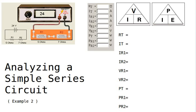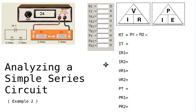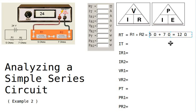So first of all, in a series circuit, the resistance is simply the sum of the individual resistances. We write that as RT equals R1 plus R2. In this case, we have 5 ohms plus 7 ohms — that gives us 12 ohms. 5 ohms plus 7 ohms is 12 ohms.